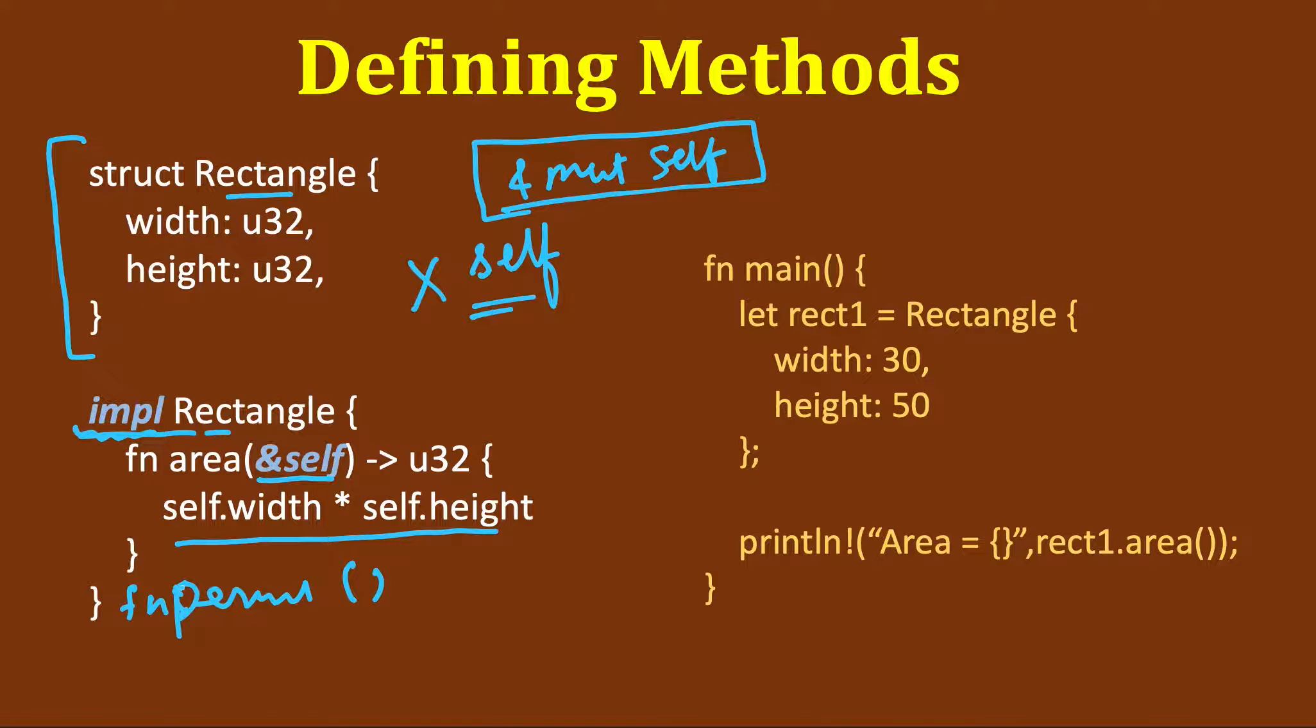You see that we are organizing the code here, so it's for organization purposes. We are putting all the capabilities of rectangle, whatever rectangle can do, inside one impl block. We could do the same thing with multiple functions scattered all over the place, but it's a good way of organizing things.